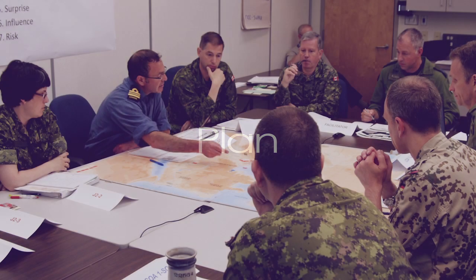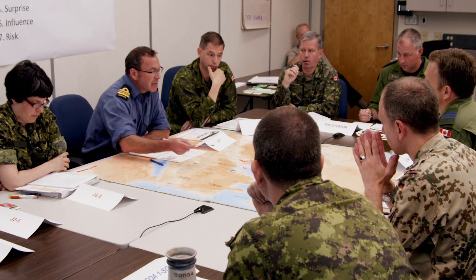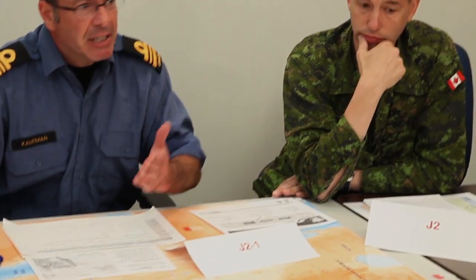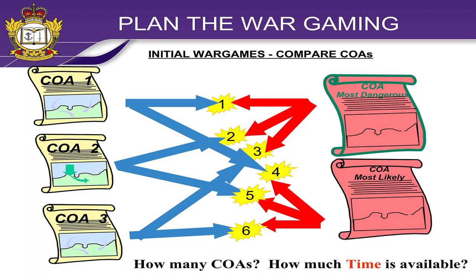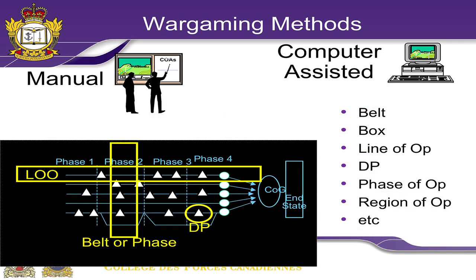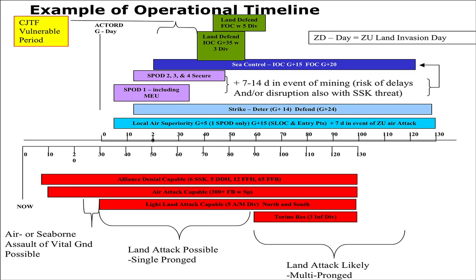The first step in wargaming is to develop your plan. Time is a critical factor — seldom, if ever, is there sufficient time to fully wargame all combinations. You must carefully plan your wargame to achieve the maximum benefit. Step 1: select which own and adversary COAs will be used during wargaming. Step 2: decide which method to use, such as by phase, by selected decision points, or by lines of operation. Step 3: synchronize your own timeline with your adversaries. In this example, J5 and J2 will synchronize their own timeline with their adversaries.